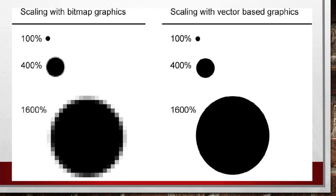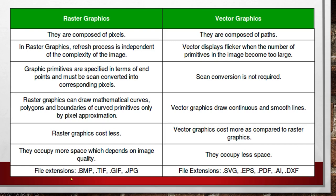Ano yung mga file extension ng raster? Ito nga po: bitmap, TIF, JIF, JPEG, and PNG. Then sa vector graphics naman: SVG, EPS, PDF, yung AI — ito po yun, Illustrator — at DXF.